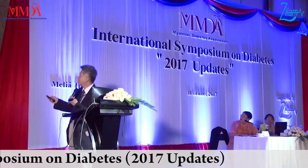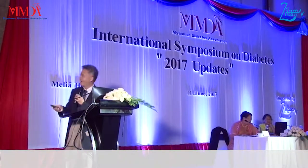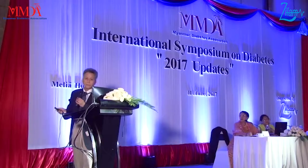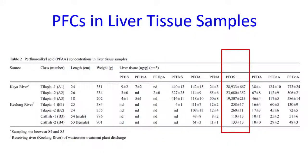Looking at the aquatic environment and the very high exposure of PFOS: this is tilapia and catfish — the muscle level is only 1,400. Here from the Kea River and Taipei River, it is not so high, but the liver tissue is very, very high. So don't eat the liver of the fish.